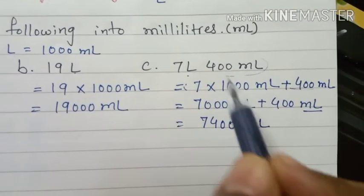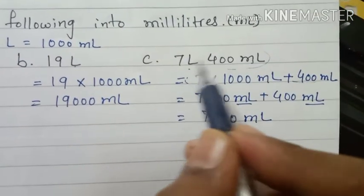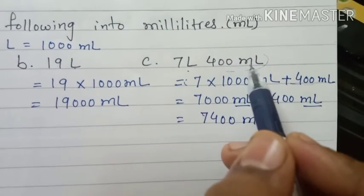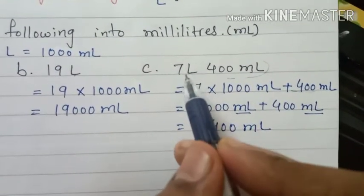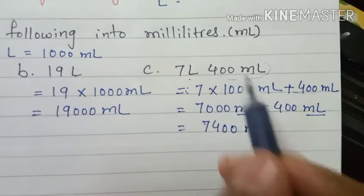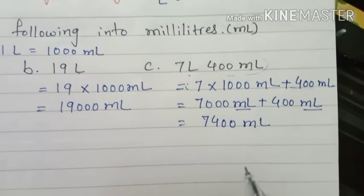If we have both liter and milliliter, we cannot directly add them. First we must convert to milliliter, and then add the numbers.